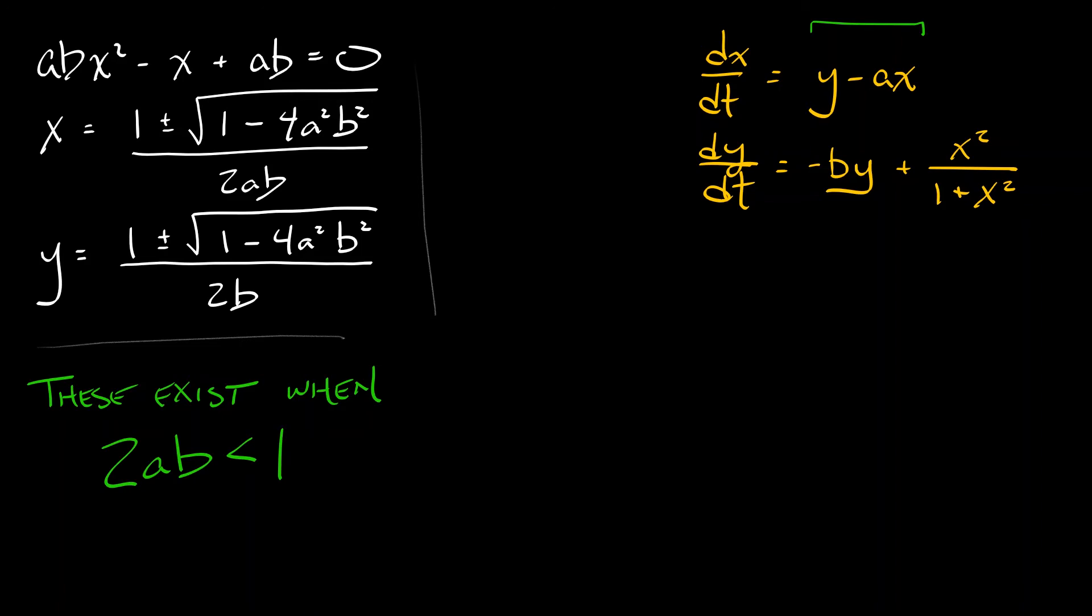Now examining these equilibria carefully, we see that they exist only when the term under the square root is non-negative. That is, when 2ab is less than 1. When that quantity 2ab equals 1, then the term under that square root goes to zero. This pair of equilibria merges together and collapses.